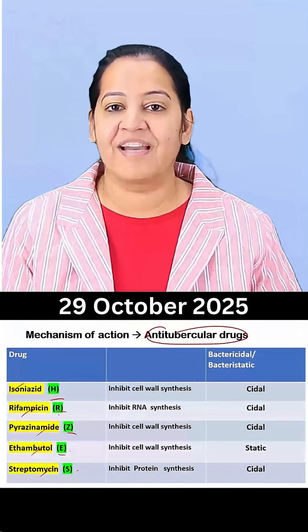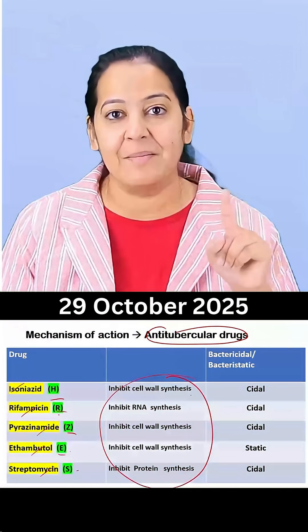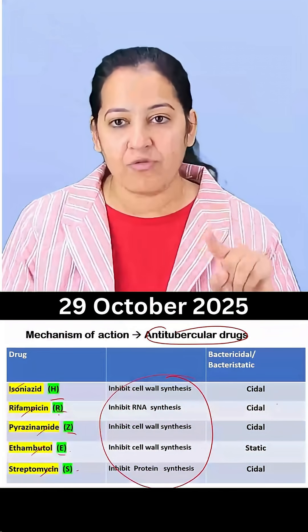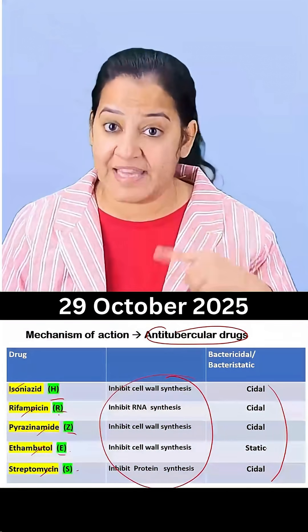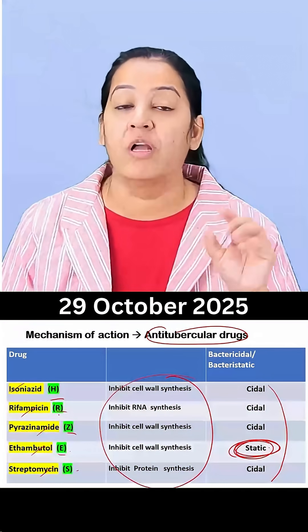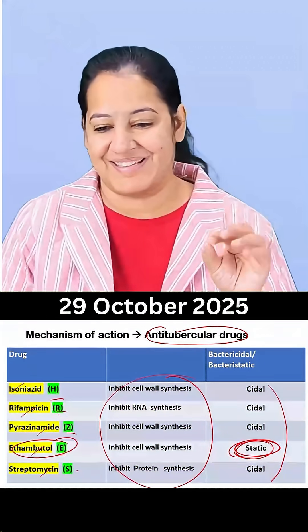So this is the mechanism of action of all 5 drugs in mycobacterium tuberculosis. Out of the 5, all of them are bactericidal — they kill the bacteria — except ethambutol, which does not kill the bacteria; this one is bacteriostatic.